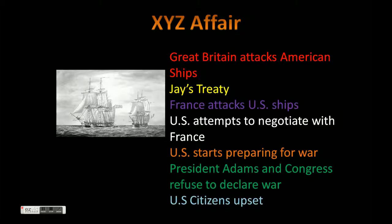Other countries weren't really letting us remain neutral — they kept trying to pull us in. Great Britain was attacking American ships, so we had to deal with this directly, and this led to Jay's Treaty. They agreed to stop attacking our ships, pay us back, and remove all troops left in North America. We were also going to pay back our war debts, which we were already going to do under Hamilton's financial plan. However, by signing this we somewhat violated the treaty we had already signed with France, so they were upset and started attacking our ships.